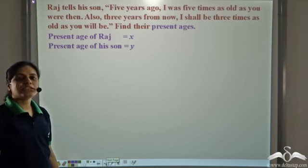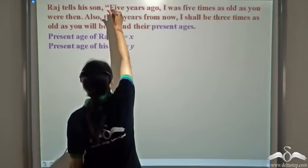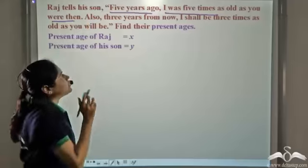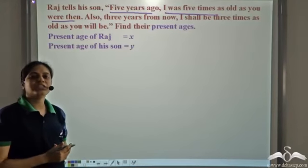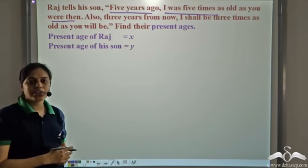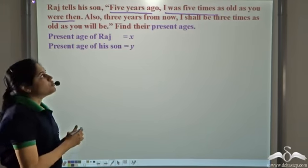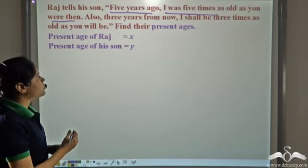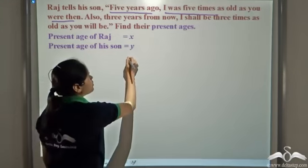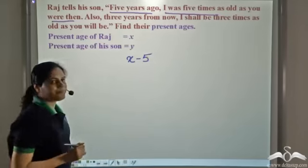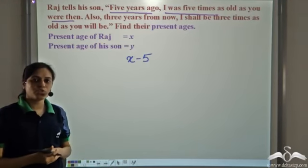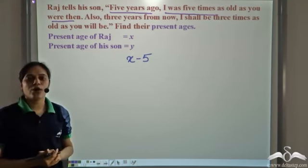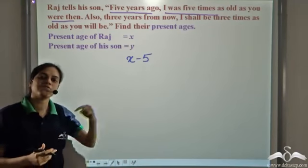Now let's see what else is given to us. Five years ago, I was five times as old as you were then. Since Raj is saying this to his son, 'I' means Raj and 'you' stands for son. So first we need to find what were their ages five years ago. Five years ago, age of Raj would be x minus five. If you are fifteen years old now, five years ago you were ten years old. So if Raj is x years old now, five years ago he was x minus five years old.